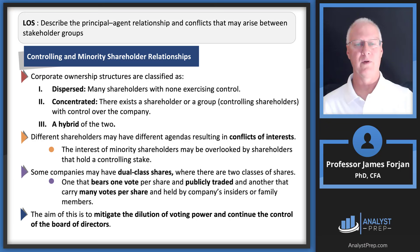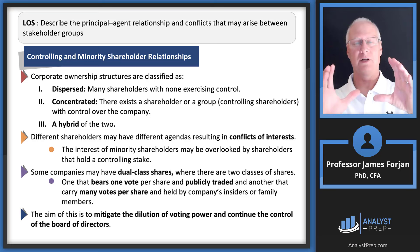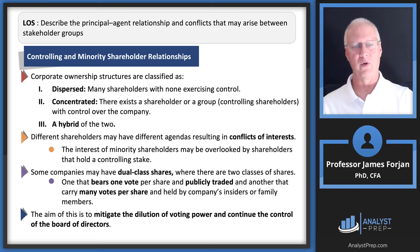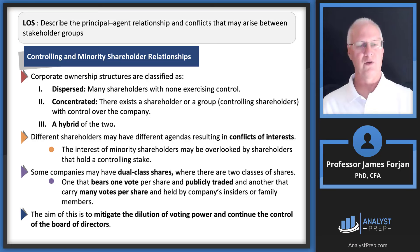Over the years, corporations have come up with some pretty interesting ideas to lessen this conflict — dual class shares, where class A shares get to vote for the board of directors and class B shares don't get to vote at all. That's an extreme example, and you can divide dual class shares into almost anything you want. The goal is to mitigate the dilution of voting power and continue control of the board of directors. There are all different sorts of ways — cumulative voting, classified boards — to try to influence how the board can look beyond just the maximizing of the shareholder wealth goal.